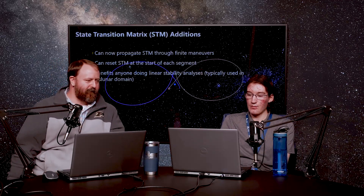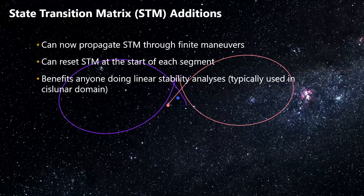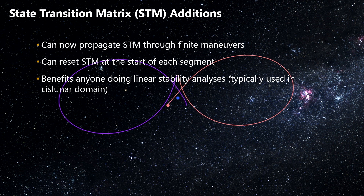Thanks Cody. First, we have some new additions regarding the state transition matrix. Prior to 12.4, you could only propagate the STM in propagate segments. Now you can propagate the STM through finite maneuvers as well. You can also reset the STM at the start of each segment, which makes it easier to compute quantities such as the Monodromy matrix — the STM after one revolution. So if you're doing any kind of linear stability analysis in SDK, these capabilities are useful for you.